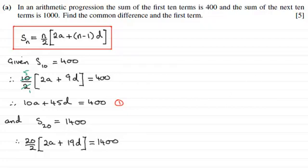And so again, if I cancel through here, 2 into 20 goes 10 times. So we can expand the bracket, multiply it out by 10, and therefore we get 20A plus 190D equals 1400. And we'll call that equation 2.